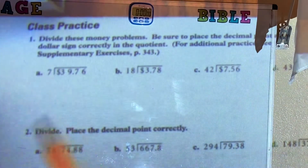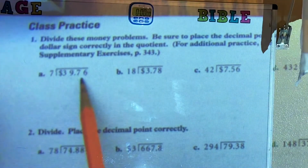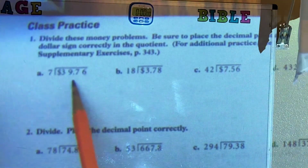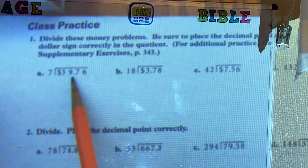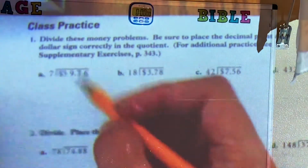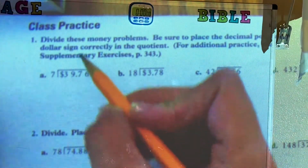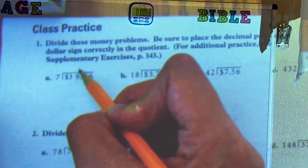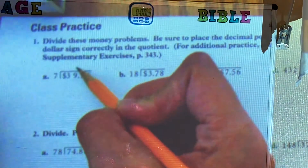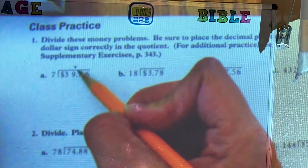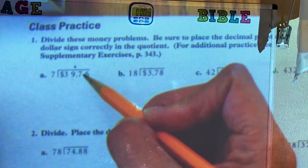So if we look at number one, it tells us $39.76. Before we start solving the division, this decimal point right here — we have to move it up. We're going to put the decimal point up on top, right there. Okay, and now we can start dividing.